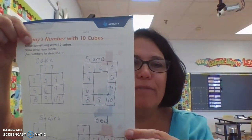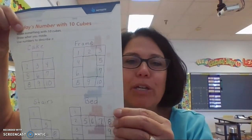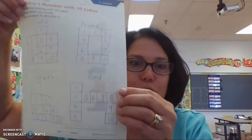And I numbered each one, 1, 2, 3, 4, 5, 6, 7, 8, 9, 10. So you can see I used all 10 of my cubes. The next one over, I did a picture frame. And again, I labeled the numbers 1 through 10 to make sure I used all 10 of my cubes in my picture.